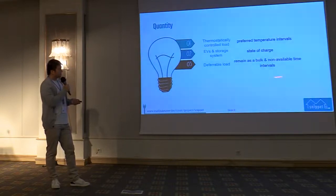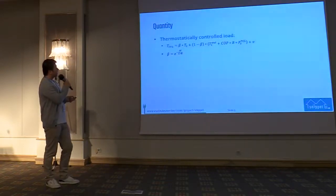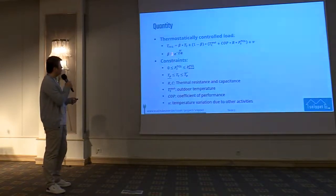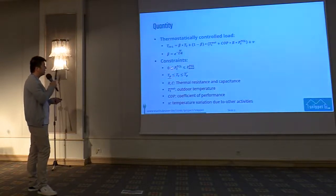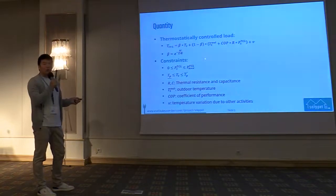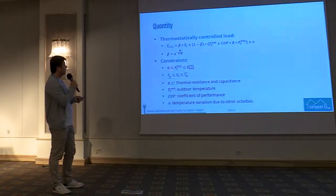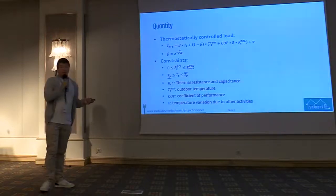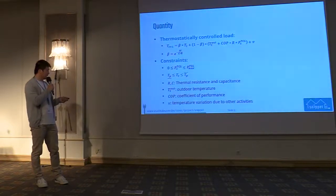The user can also choose which time slots they do not want to shift these demands. For the thermostatically controlled loads, for each time step T we calculate the temperature in the room. This temperature must remain within the user's preferred temperature intervals without violating any comfort constraints, and it also has physical constraints on power consumption. For each time slot, we calculate the possible power they can provide for flexibility without violating any constraints.